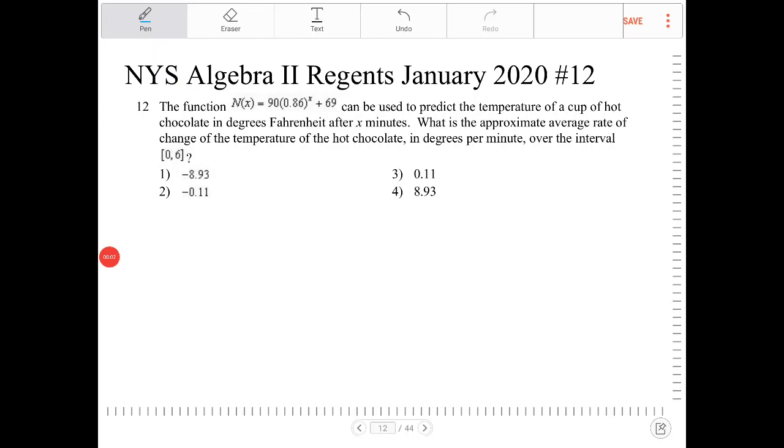The function N(x) = 90 times 0.86 to the x plus 69 can be used to predict the temperature of a cup of hot chocolate in degrees Fahrenheit after x minutes. What is the approximate average rate of change of the temperature of the hot chocolate in degrees per minute over the interval from 0 to 6?